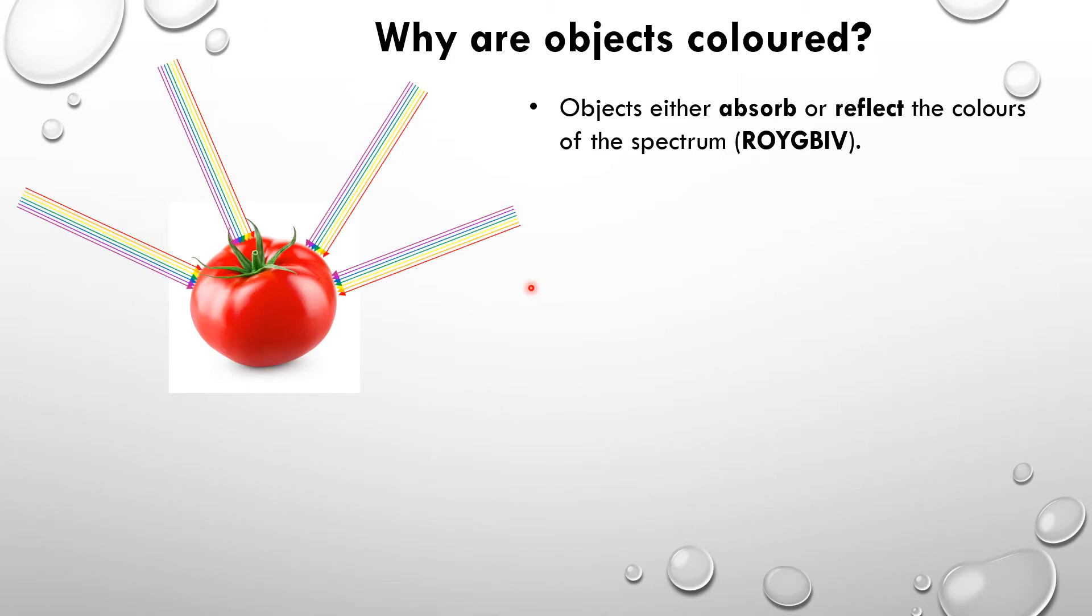So if this tomato is hit by white light, which is a combination of ROYGBIV light, it appears red or a red orange colour because all of the light rays, except the red and orange rays, are absorbed by the skin of the tomato.